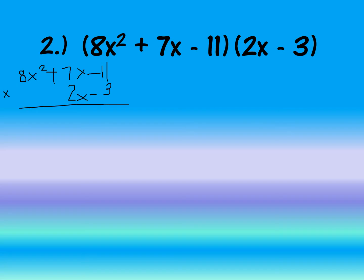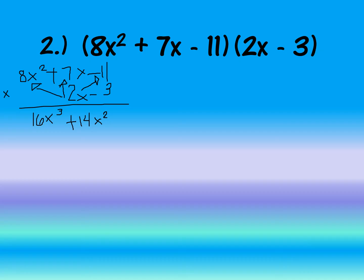Multiply 2x by 8x²: 2 times 8 gives us 16, copy x, exponent 2 plus 1 gives us 3, so 16x³. Then 2x times 7x: 2 times 7 gives 14, positive, x squared. Then 2x times negative 11: gives us negative 22x. Then multiply negative 3 by 8x²: negative 3 times 8 gives negative 24x², aligned under x² terms.